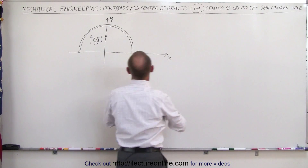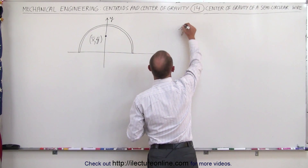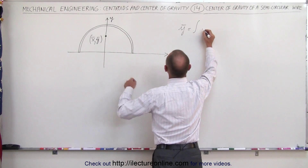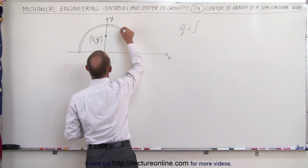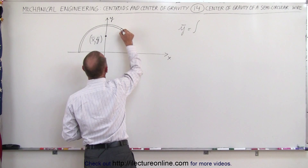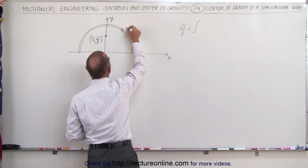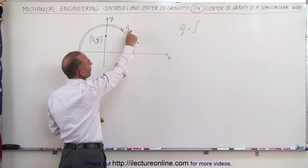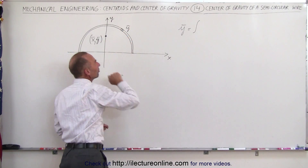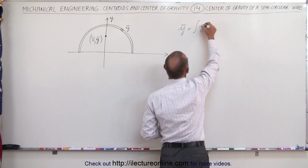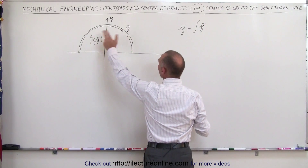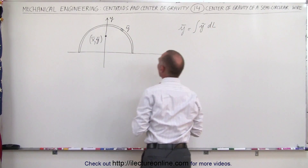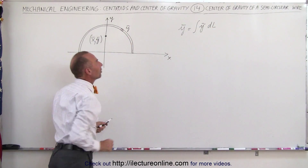What we're going to do is write that the y-coordinate of the center of mass is equal to the integral of the center of mass of a small little segment — we'll call that ỹ, the center of mass of that small segment — times dl. We don't have an area here, we have a length, so we'll let dl represent the mass of that small little segment.